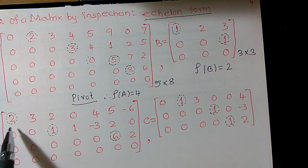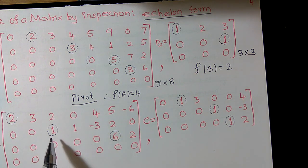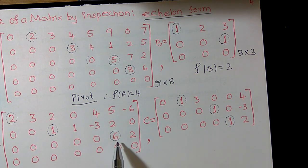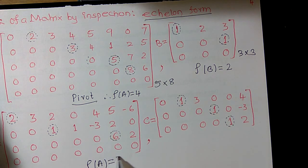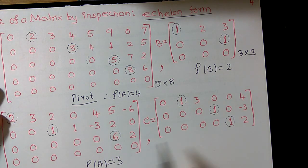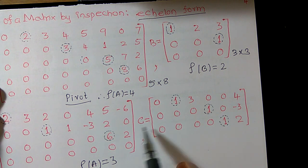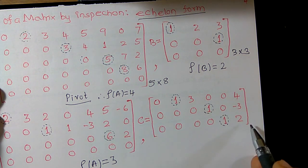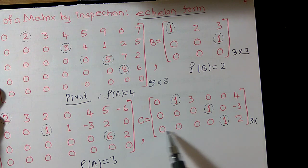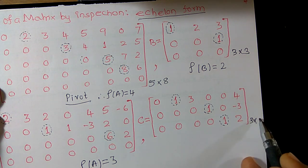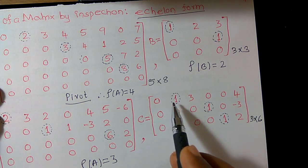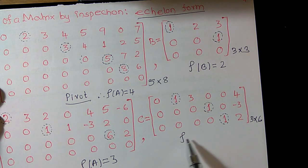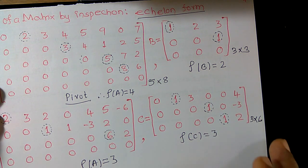Similarly, echelon matrix C has order 3 cross 6. Counting the pivot elements: 1, 2, 3 — there are 3 pivot elements. Therefore rank of C is equal to 3. Very easily you can find out the rank of a given matrix in echelon form.